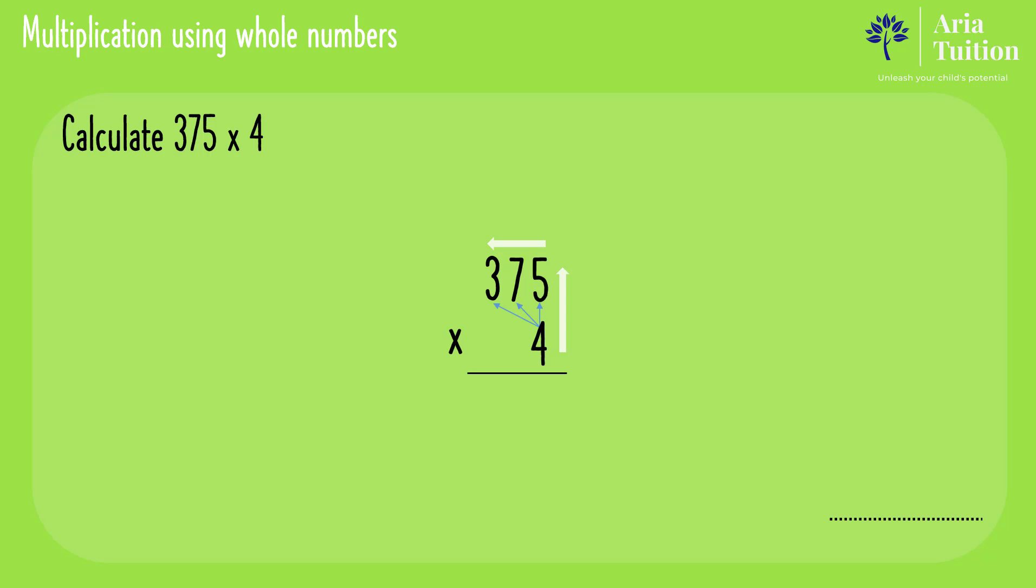4 times 5 is 20. Since 20 is a two-digit number, the zero units is written below and the two tens is carried on to the next column.